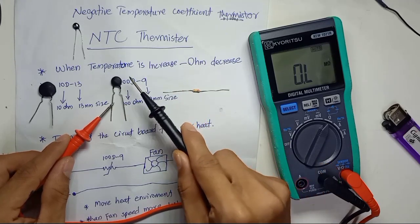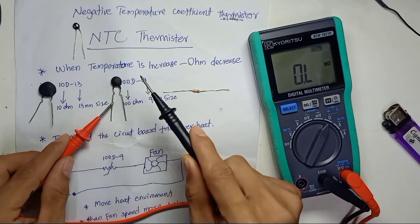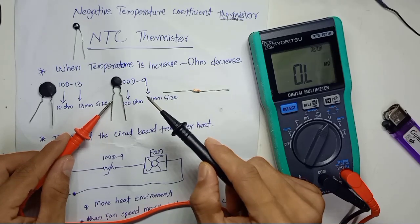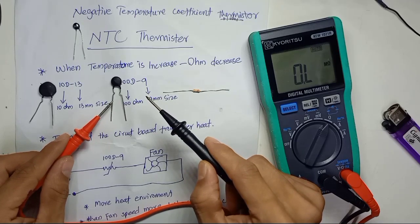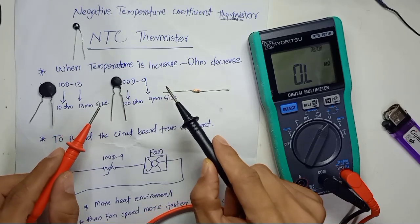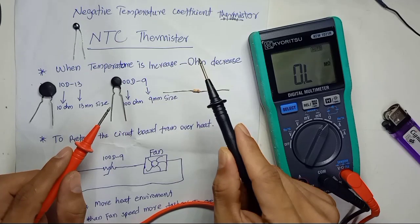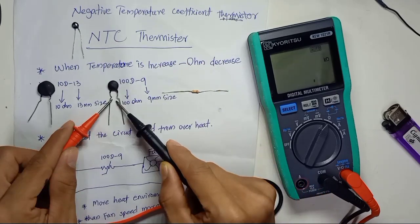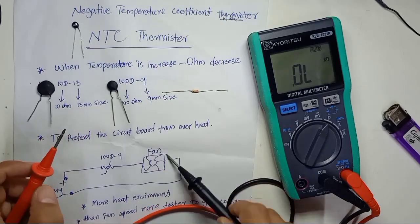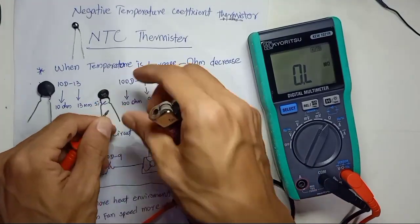If the environment is hot and we apply heat to this thermistor, the ohm will decrease. That is the key difference between a resistor and a thermistor. In the next video I will explain the PTC — positive temperature coefficient thermistor — but for now we are focused on NTC.